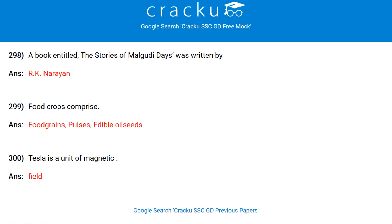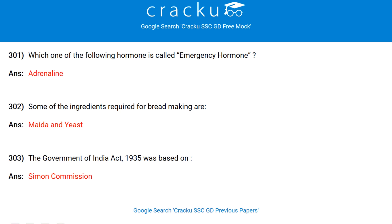Food crops comprise food grains, pulses and edible oil seeds. Tesla is a unit of magnetic field. Which hormone is called the emergency hormone? Adrenaline. One of the ingredients required for bread making is maida and yeast. The Government of India Act 1935 was based on the Simon Commission.